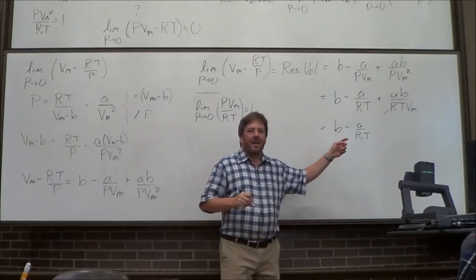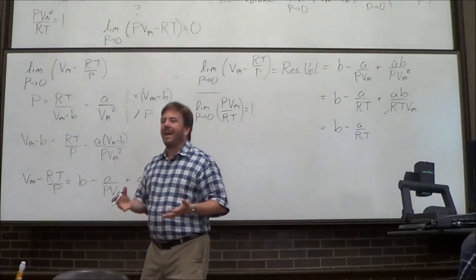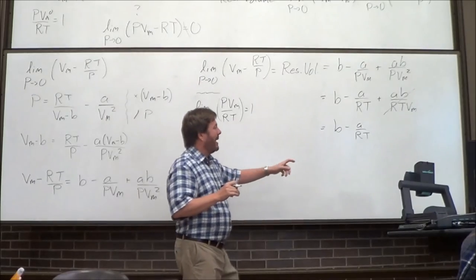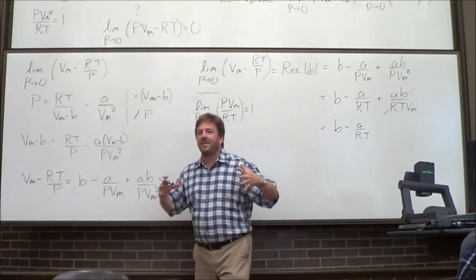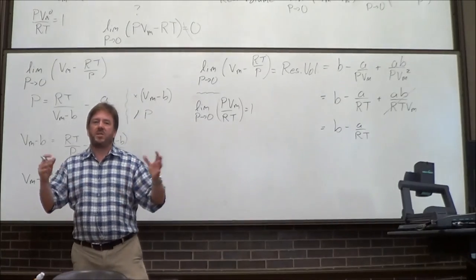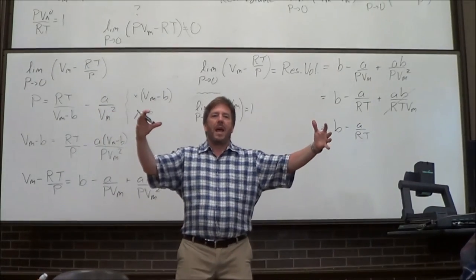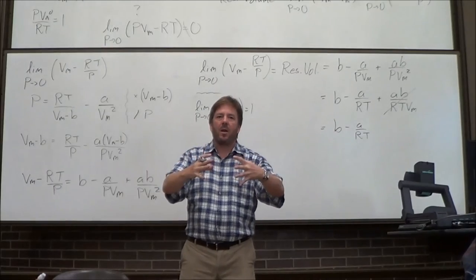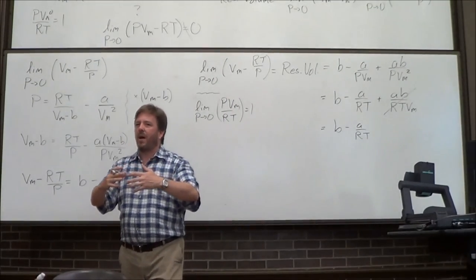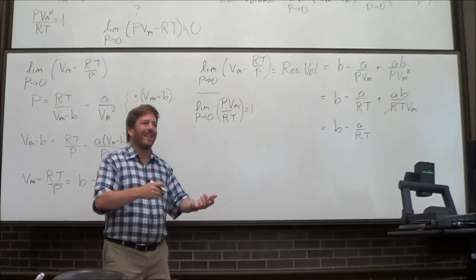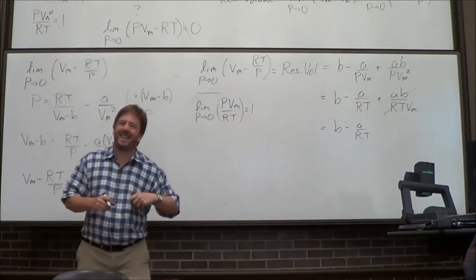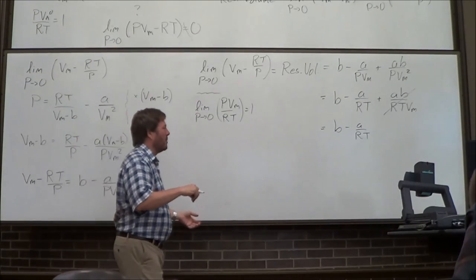Residual volume is mostly the volume of the gas itself - the finite size of the molecules - but balancing that is attractive forces, which tend to make the gas shrink as though the molecules weren't there. So residual volume equals B minus A over RT. Memorize this. It may be on the test - I'll tell you more before the test.